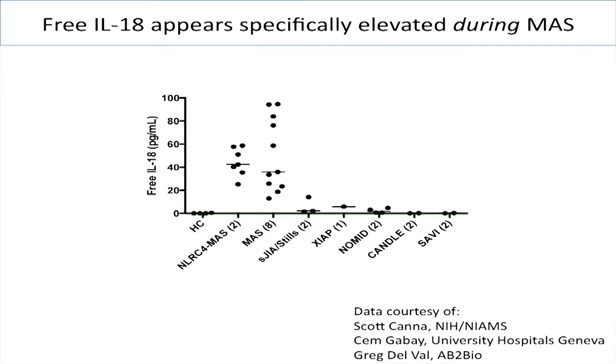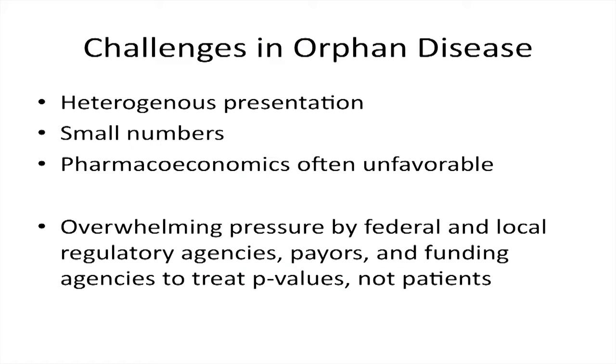That's my IL-18 story. On the challenges of orphan disease: heterogeneous presentations, small numbers, and the economics of treating rare diseases are unfavorable. We all worship at the altar of the alpha error, but I think we should consider alternate ways. In rare disease — particularly when you have your own private mutation, your own private disease, and you're an N of 1 — you shouldn't be punished for that. We need to think about other ways to decide on truth in a rigorous, quantitative manner besides a p-value. Should we consider using Bayesian statistics for some of these orphan diseases? These are discussions we can have in the panel.